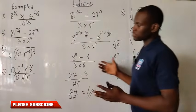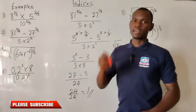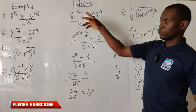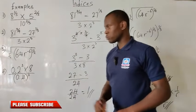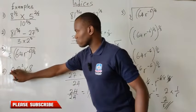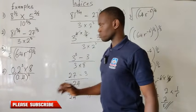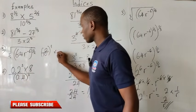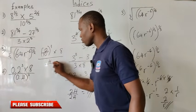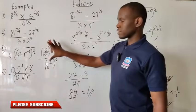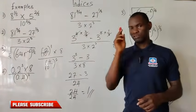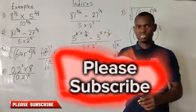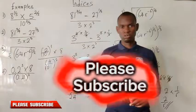I want you to apply the laws of indices we have considered to solve the fourth equation as your assignment, then drop your answer in the comment section. The first step is to expand the decimal fractions and write them as proper fractions: we will have 2 over 10 raised to the power of 3, times 8 over 4 over 10 raised to the power of 2. Then simplify. Please subscribe to my YouTube channel and hit the bell icon so that whenever I drop interesting mathematics videos you will be notified. Share the video with your friends. God bless you. Bye.